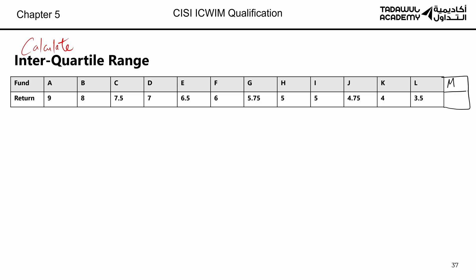So let's add one more fund here — fund M — and give it a return of 3.2. Some of you may wonder: what if CISI gives an even number and asks to calculate the range? They won't, because calculating the median is easier with an odd number of data points. With an even number you'd have to take the two middle numbers and average them. So if asked to calculate the interquartile range, the number of investments will be odd.